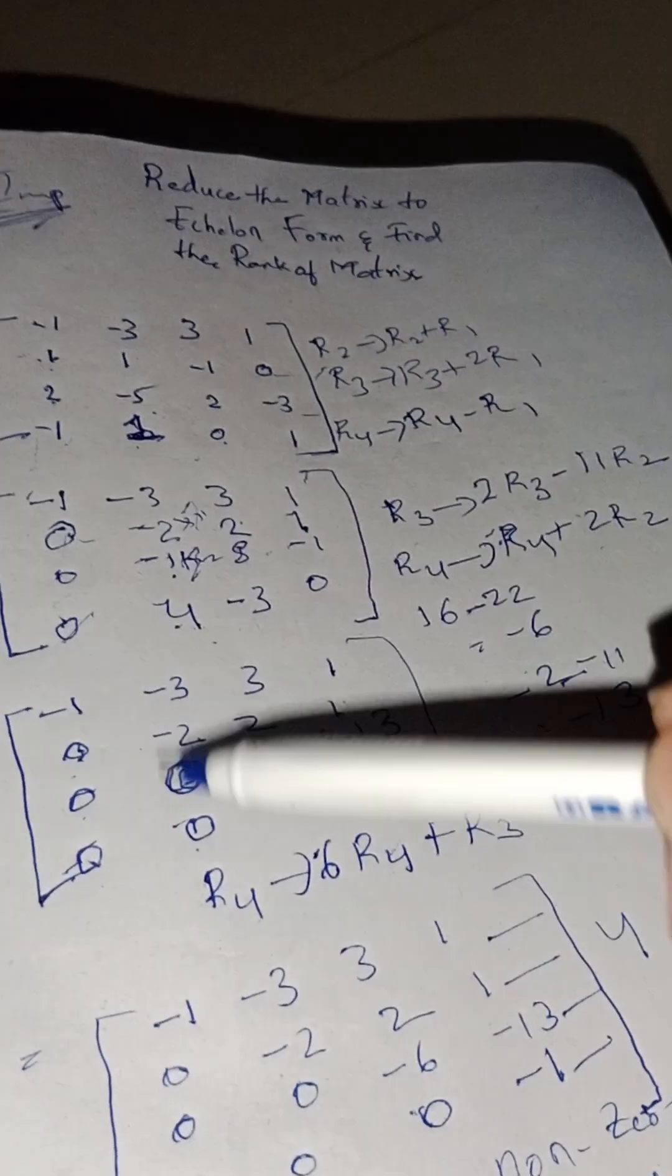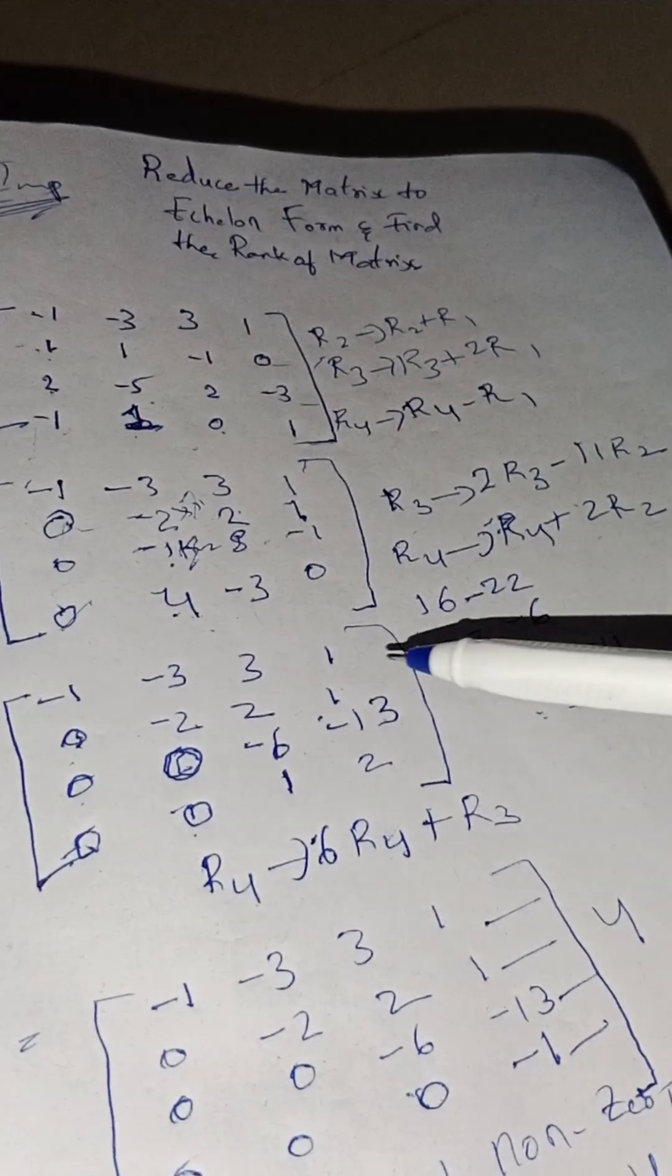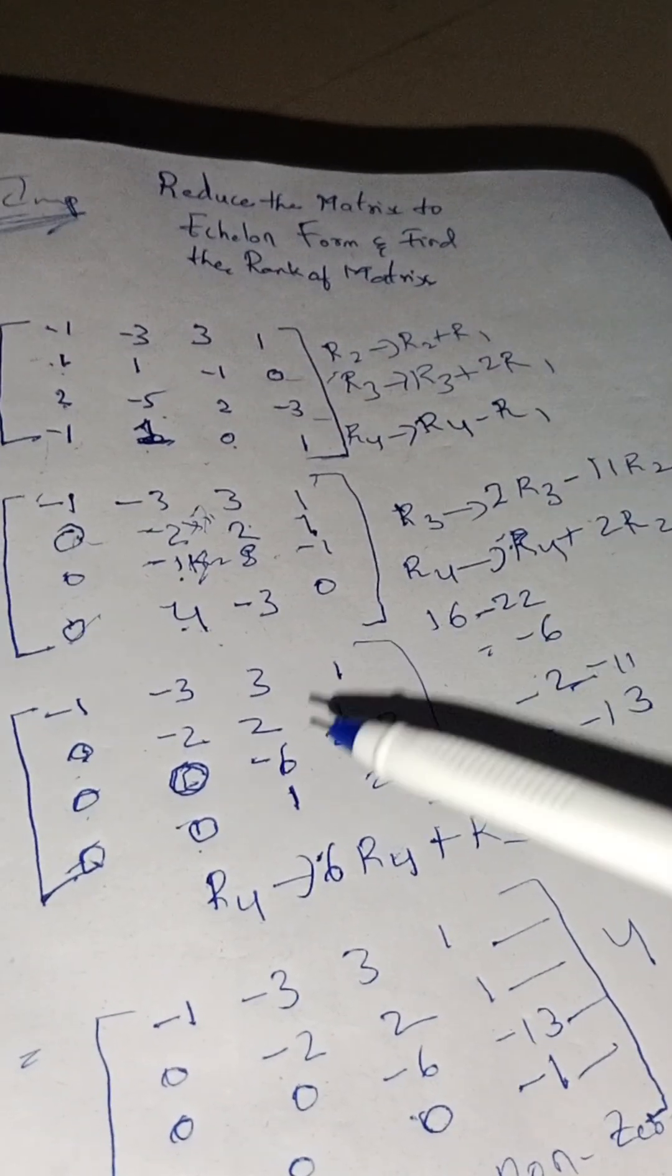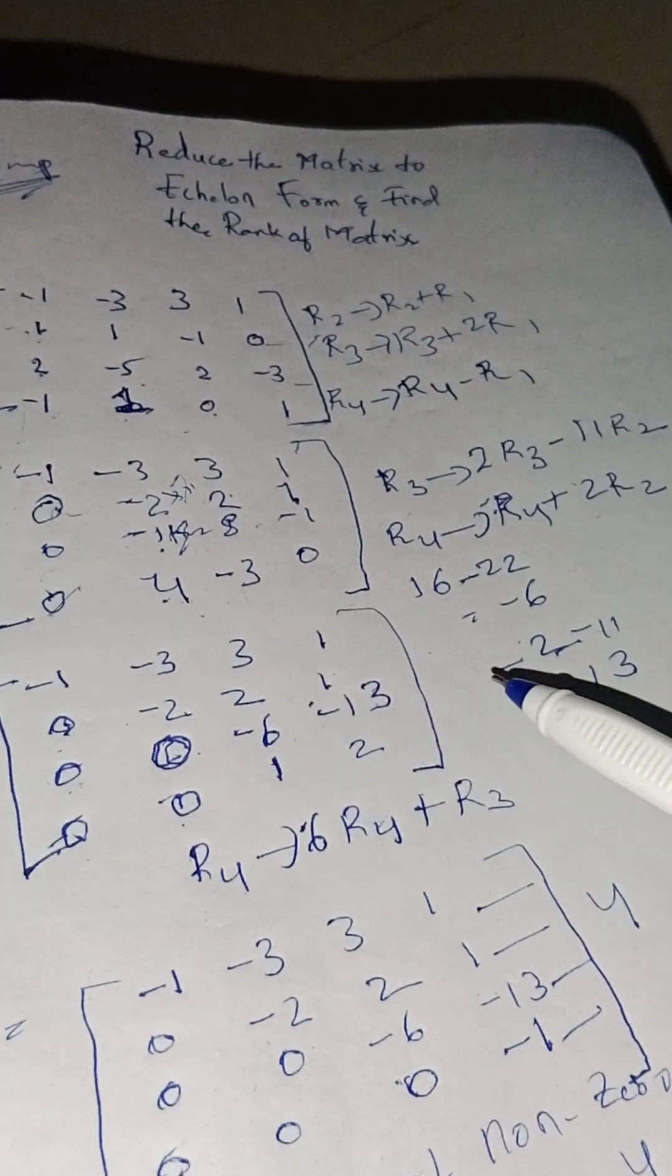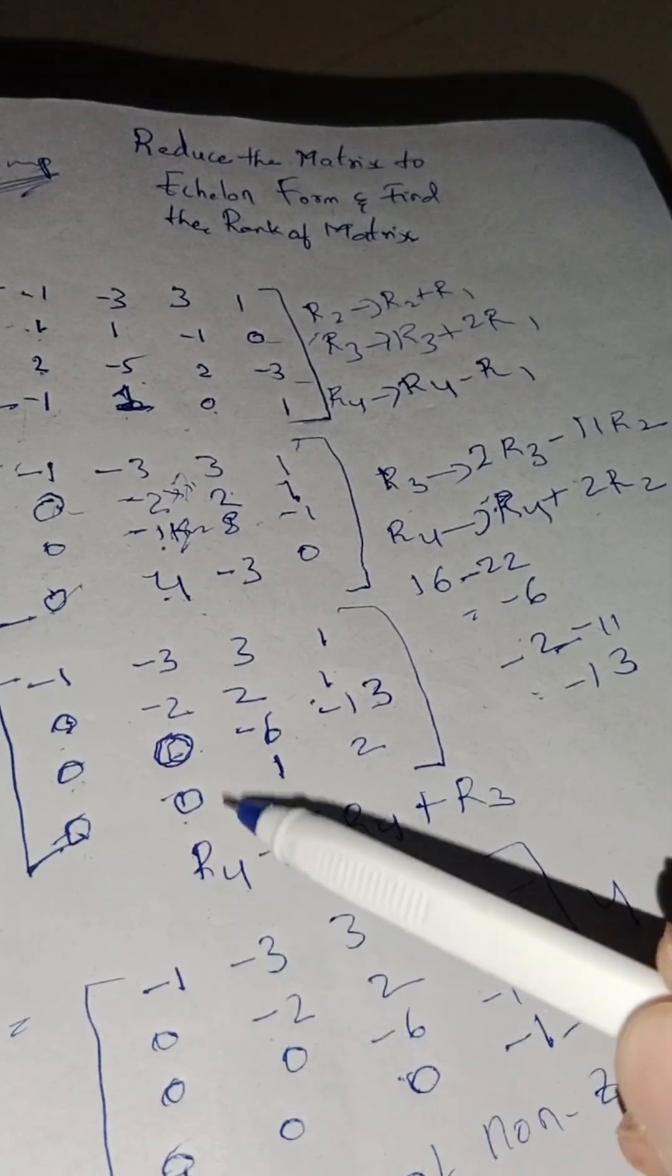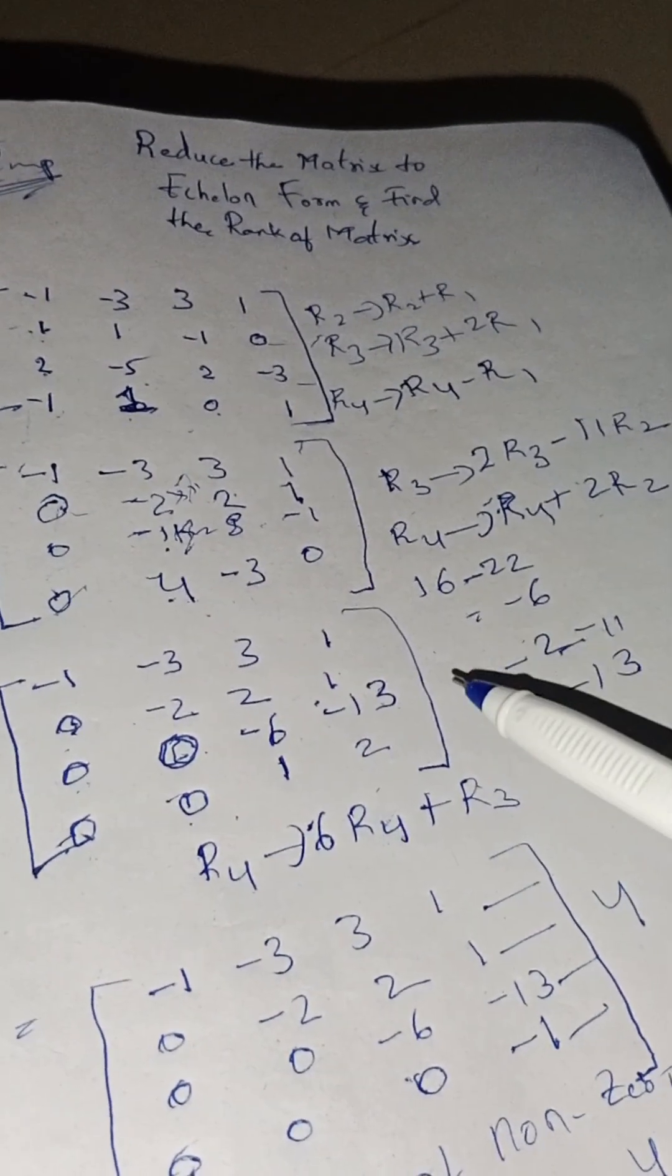After applying, the first row and second row should be written as it is. Third row should be 0, 0, minus 6, minus 13. Fourth row is 0, 0, 1, 2.